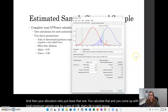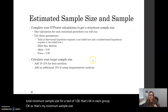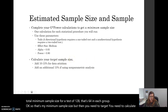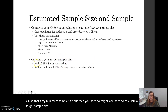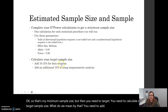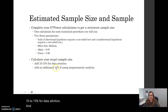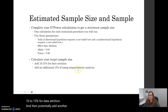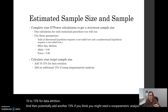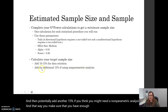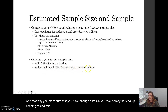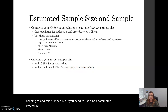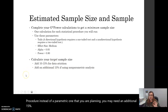So that's your minimum sample size. But then you need to calculate a target sample size. You need to add 10 to 15% for data attrition, and potentially add another 15% if you think you might need a non-parametric analysis. That way you make sure you have enough data. You may or may not end up needing to add that number, but if you need to use a non-parametric procedure instead of the parametric one you're planning, you may need that additional 15%.